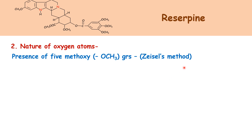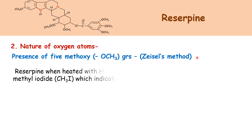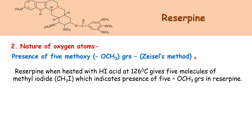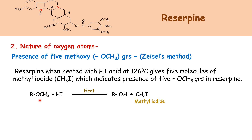Then nature of oxygen atoms. In reserpine, there are five methoxy groups, and those methoxy groups are detected and estimated by Zeisel's method. Reserpine, when heated with hydroiodic acid at 126 degrees Celsius, gives five molecules of methyl iodide, which indicates the presence of five methoxy groups in reserpine.